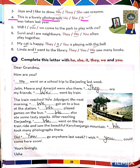Number four: This is a lovely photograph. He/she/it — it was taken last year. The photograph is a non-living thing, so we use 'it.' The sentence is: This is a lovely photograph. It was taken last year.